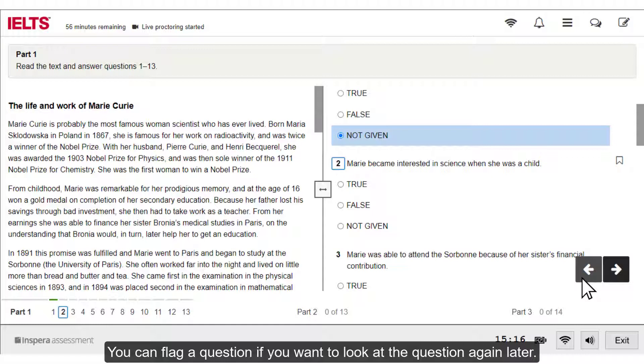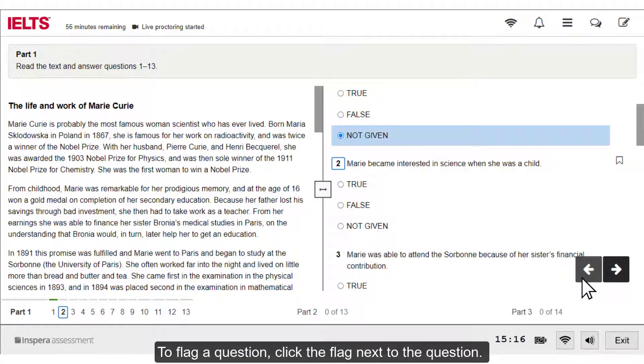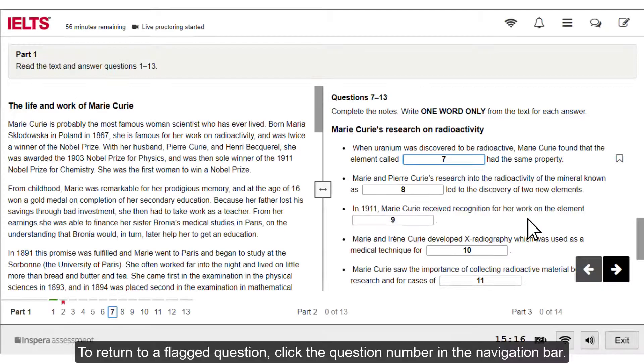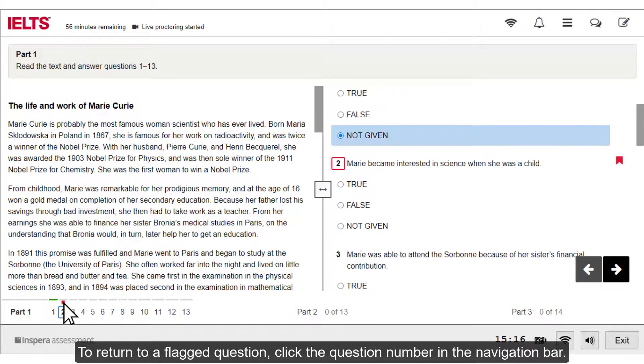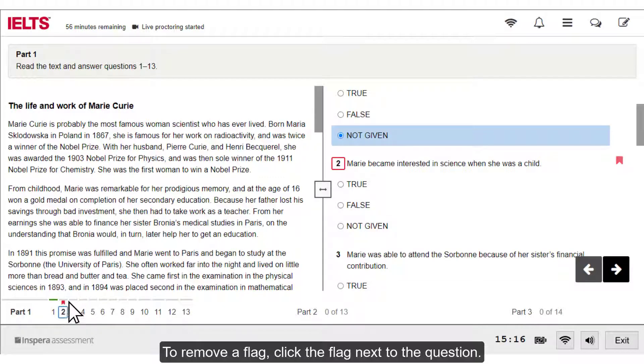You can flag a question if you want to look at the question again later. To flag a question, click the flag next to the question. To return to a flagged question, click the question number in the navigation bar. To remove a flag, click the flag next to the question.